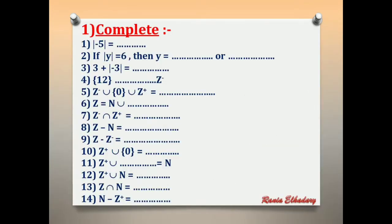Number 1: complete. The absolute of negative 5 equals what? We have the absolute, so the answer is positive. Absolute of negative 5 equals 5.